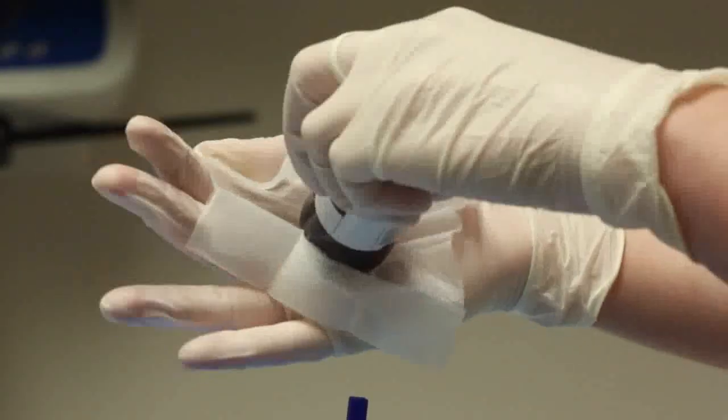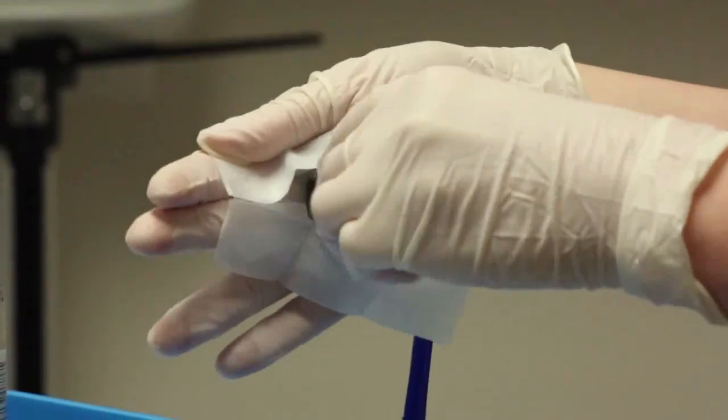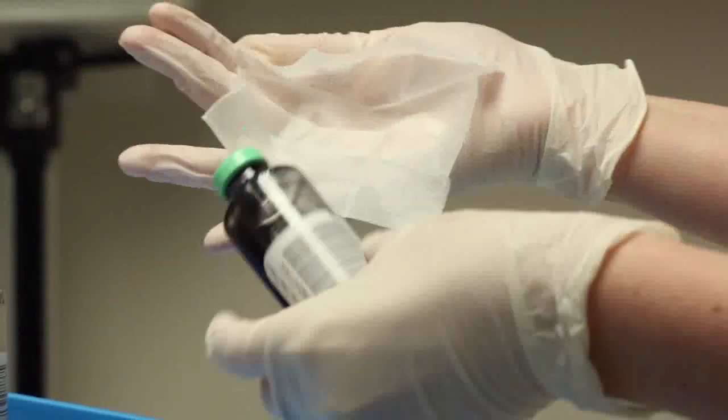Present the bottle top towards the center of the wipe and scrub the top for 20 seconds, using a few different parts of the wipe. It is imperative to create friction and to allow the bottles to dry before use.